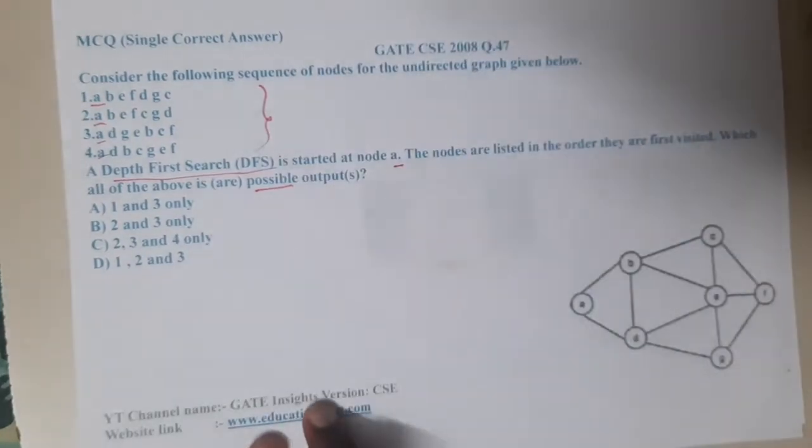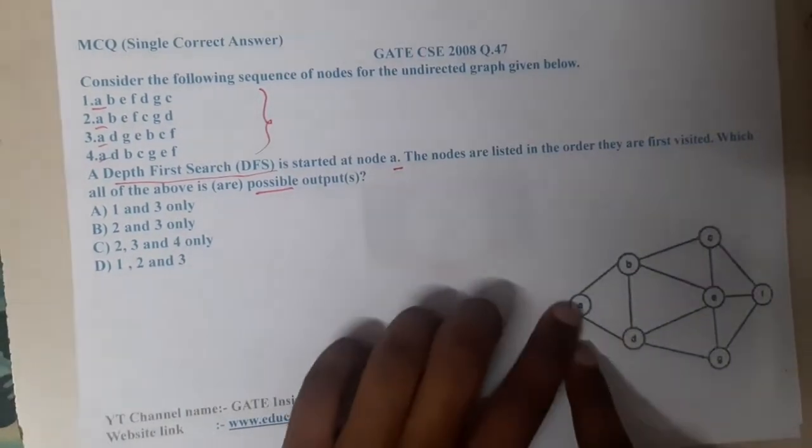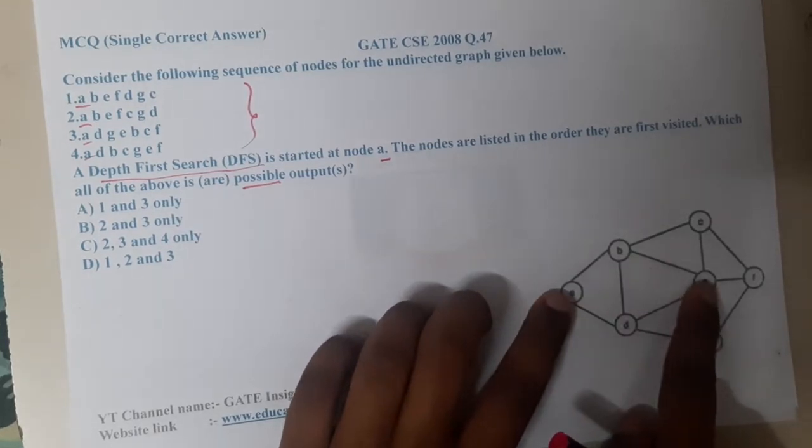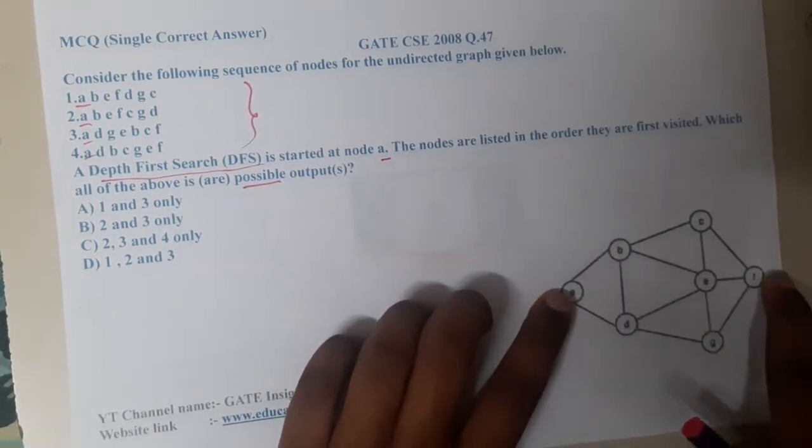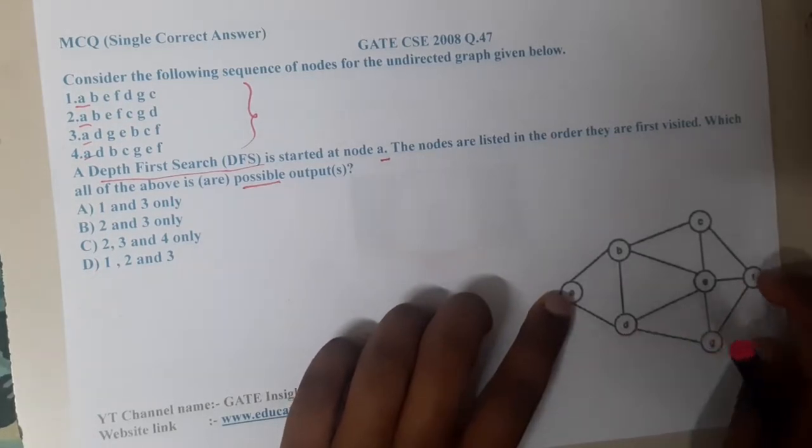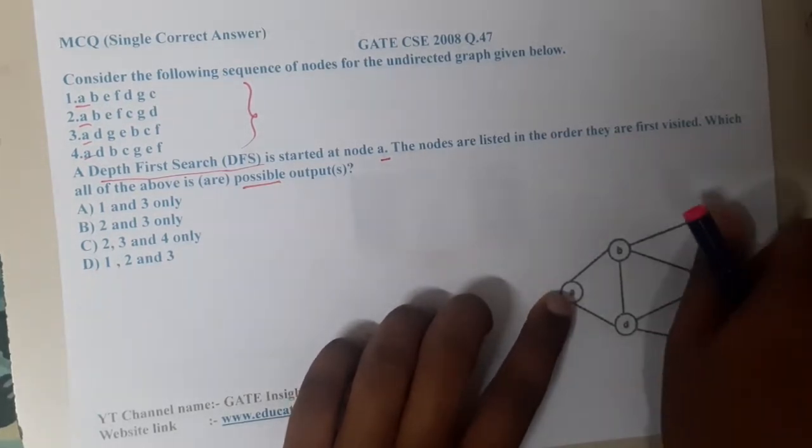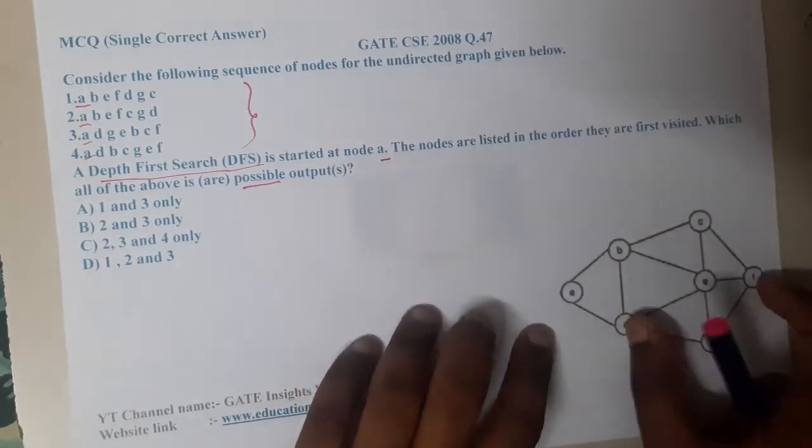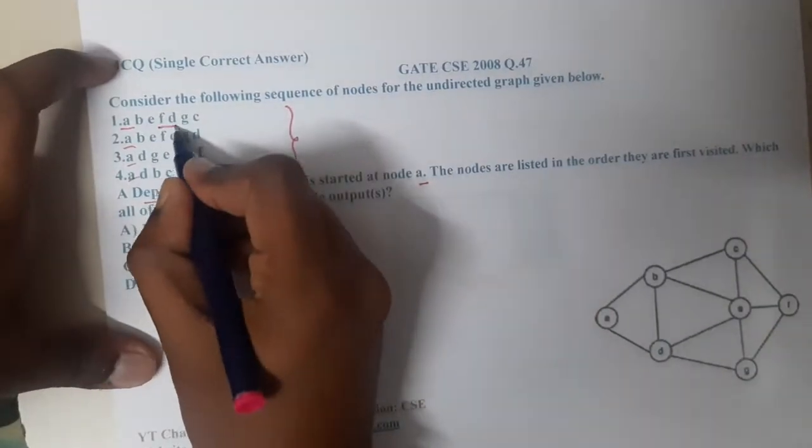Which all of the above are possible? So basically he is asking which of them is true. Let us start. First you visited a, after that you visited b, then e, then f, then d. So how come you came from f to d? You are having already two options right, you can go to c or e, but how come did you come to f directly? So from f to d that is not possible, hence this option is wrong.